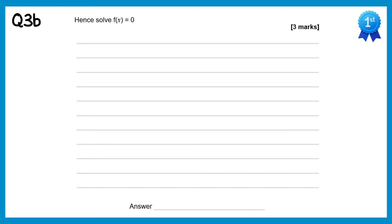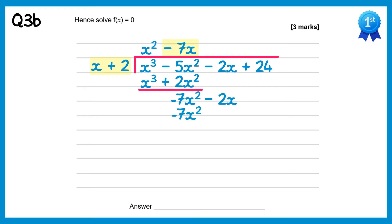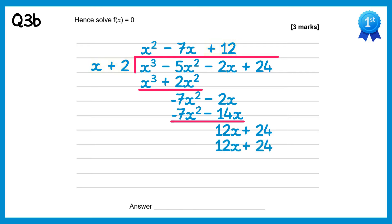For part b of this question we need to solve f of x equals 0. To do this we need to fully factorise f of x. We have one of the factors, so we'll take f of x and divide it by that factor. x cubed divided by x is x squared. Multiply the x squared back through: x squared times x is x cubed and x squared times 2 is plus 2x squared. Then subtract — x cubed takes x cubed to 0, and negative 5x squared take away 2x squared is negative 7x squared. Bring down the next term and do negative 7x squared divided by x, which is negative 7x. Multiply back: negative 7x times x is negative 7x squared, and negative 7x times positive 2 is negative 14x. Subtract — the negative 7x squared cancel and negative 2x subtract negative 14x is 12x. Bring down the final term. Do 12x divided by x which is plus 12, multiply that back through to get 12x plus 24, subtract these and you get 0.